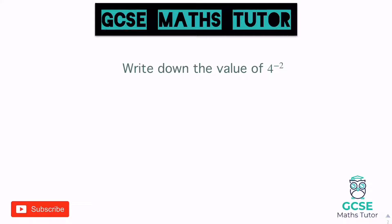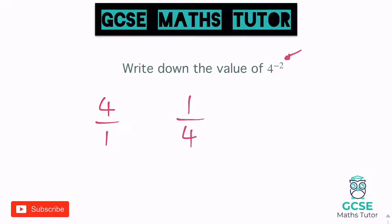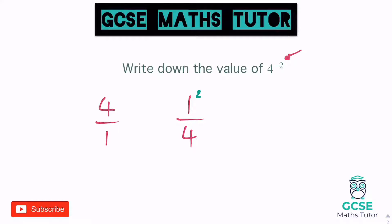Write down the value of four to the power of negative two. The negative part still does the same thing — we do the reciprocal. Four is not a fraction, so we write it as four over one, and the reciprocal of that is one over four. The two is just a normal power of two, so we square what we've got. When squaring a fraction, we square the top and the bottom. One squared is one, and four squared is 16. So our final answer is one over 16. A negative power flips it over; the number is just a normal power.